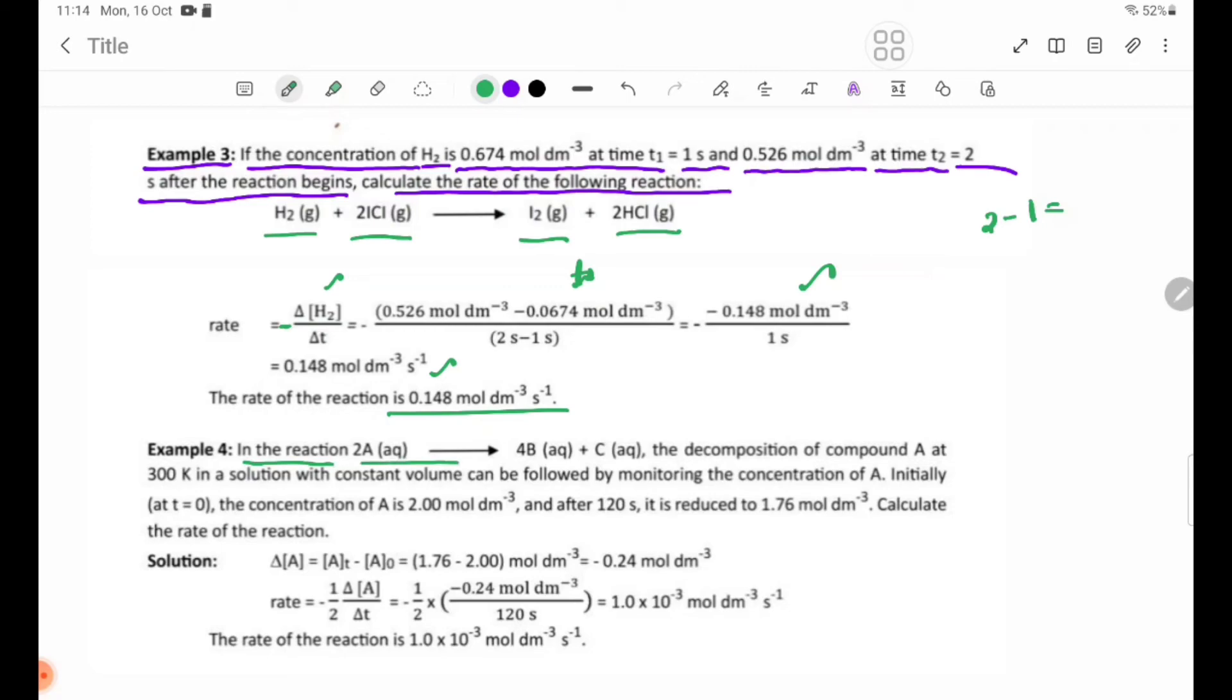Example 4: In the reaction 2A(aq) → 4B(aq) + C(aq), the decomposition of compound A at 300K in a solution with constant volume can be followed by monitoring the concentration of A. Initially at t = 0, the concentration of A is 2.00 mol/dm³, and after 120 seconds it is reduced to 1.76 mol/dm³. Calculate the rate of the reaction.